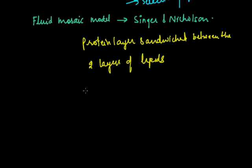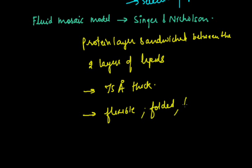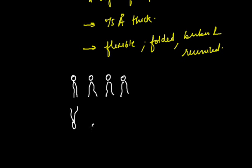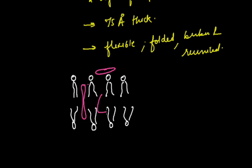The thickness of the plasma membrane is around 75 angstroms. It is very flexible and can be folded, broken, and reunited. According to this model, there are two layers of lipids — a phospholipid bilayer.